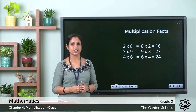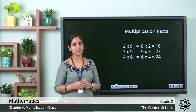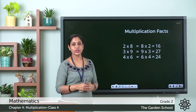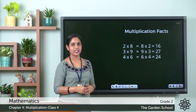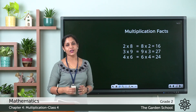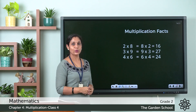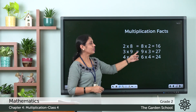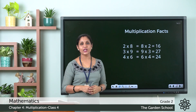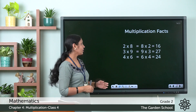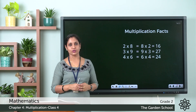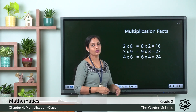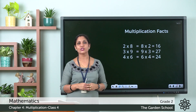We know that 2 × 8: 2 eights are 16, and 8 × 2 is also 16. What about 3 × 9? 3 nines are 27 and 9 × 3 is also 27, so 3 × 9 = 9 × 3 = 27. Next, 4 × 6 = 6 × 4 = 24.